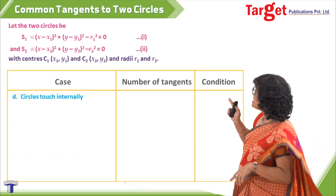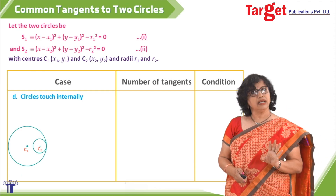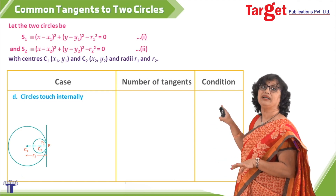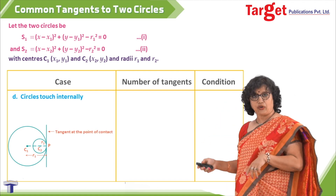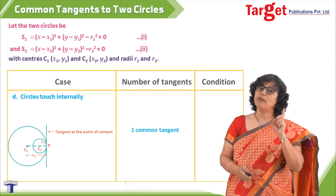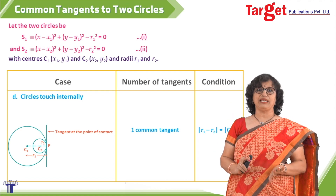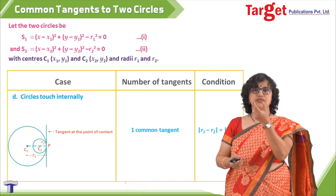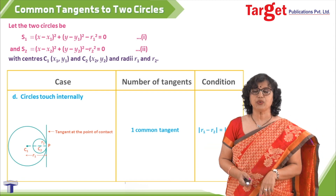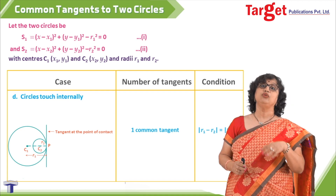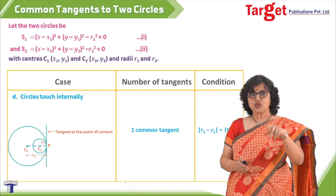The next case is circles touch internally. The transverse tangent is gone — the only tangent is the one drawn at the common point of contact where the two circles touch each other. So there is only one common tangent. The condition is that distance c1c2 equals the absolute value of r1 minus r2. We use absolute value since we do not know which radius is larger.